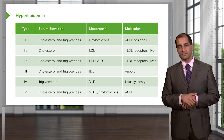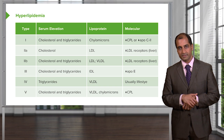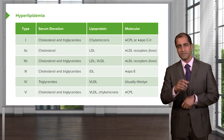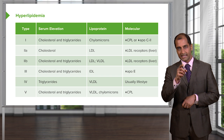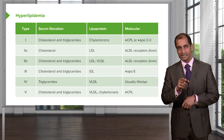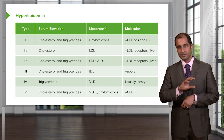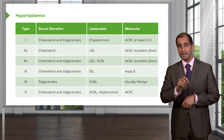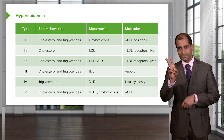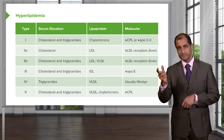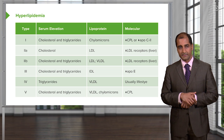With LDL receptor deficiency, you accumulate LDL, which means cholesterol — this is hypercholesterolemia. The difference with Type 2B is the combination of both LDL and VLDL accumulating in your circulation. But the fundamental problem in Type 2 is deficiency of LDL receptors, most likely in the liver.